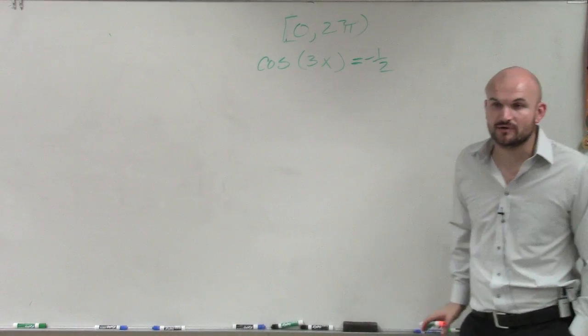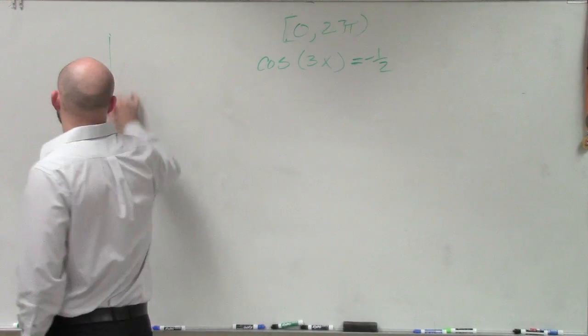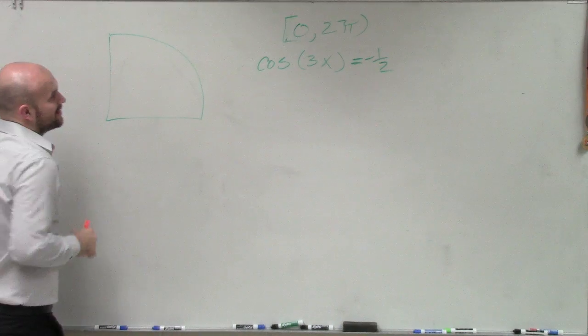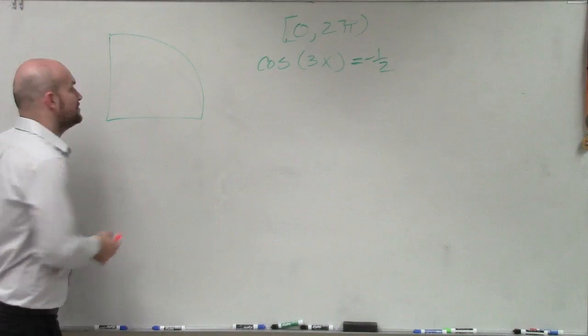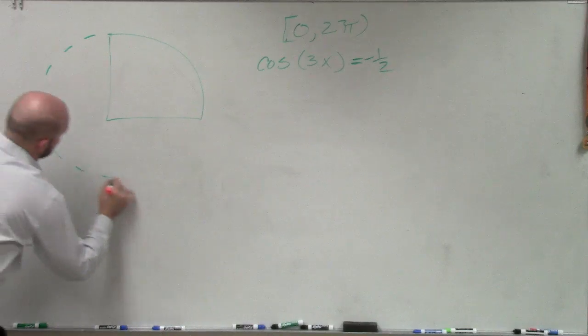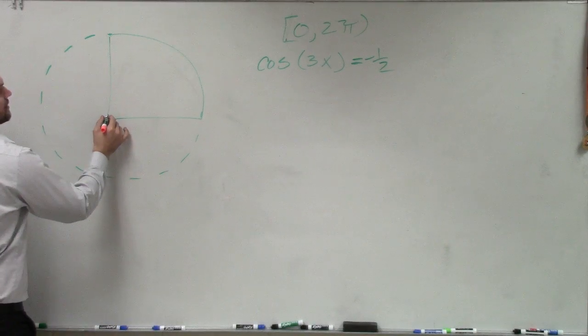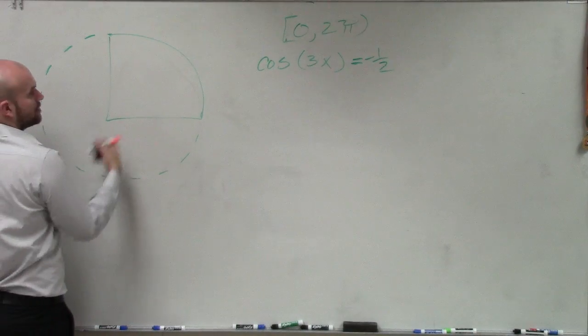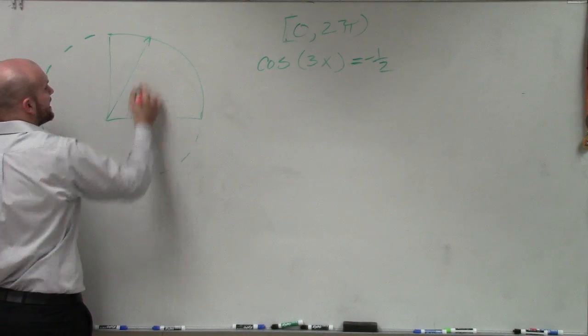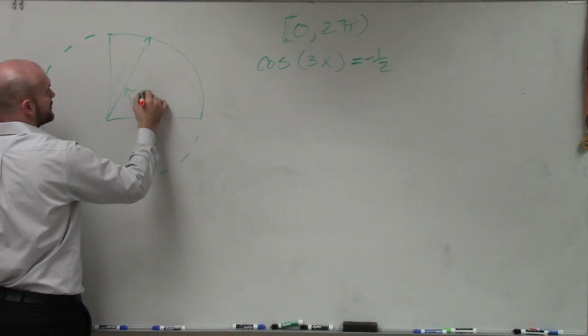We have cosine of 3x equals negative 1 half. We go over to our backpack, and we go to our unit circle and say, when does cosine equal negative 1 half? And you can see that, well, we know cosine equals 1 half. And again, my lovely angle at π over 3.